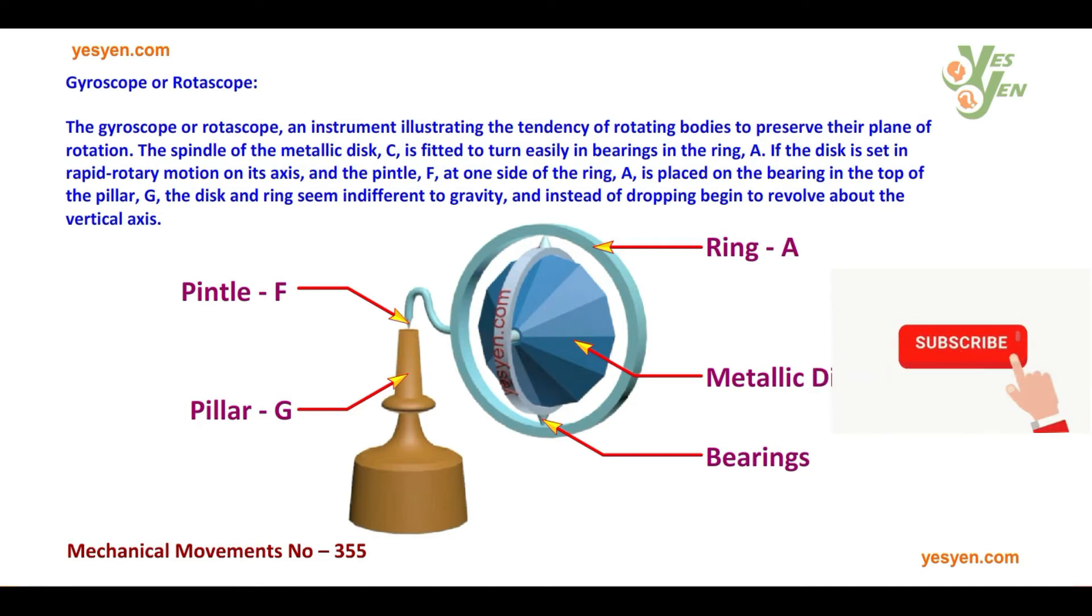The spindle of the metallic disc C is fitted to turn easily in bearings in the ring A. If the disc is set in rapid rotary motion on its axis,